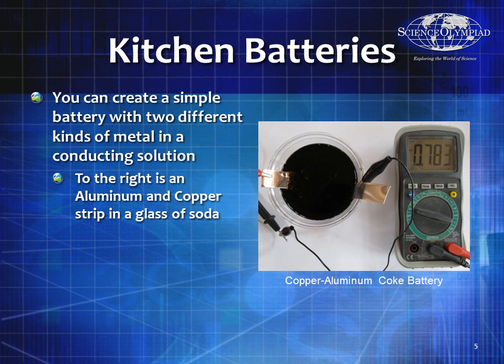We're using a multimeter set up to measure voltage, and we're getting 0.783 volts — pretty good for a Coke battery. As long as the two metals are different, you get a voltage. If you put copper in both sides, you get zero. If you put aluminum in both sides, you get zero.